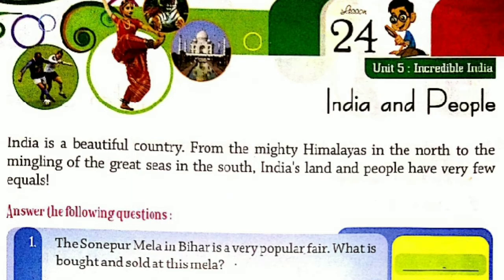India is a beautiful country. Bharat is a very beautiful country — from the mighty Himalayas in the north to the meeting of the great sea in the south. India's land and people have very few equals. देखिए, भारत में विभिन्न प्रकार के लोग रहते हैं, विभिन्न भूमियों पर। इसके बावजूद भी इन विभिन्न प्रकार के लोगों में कुछ समानता होती है। Answer the following questions.